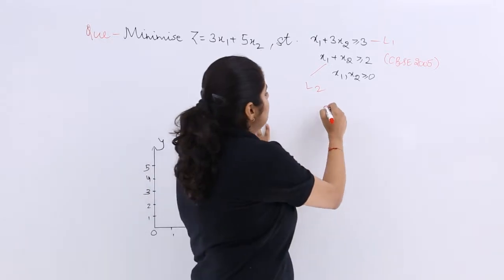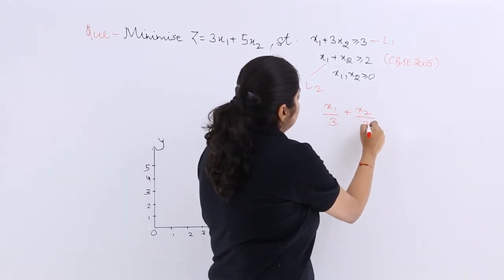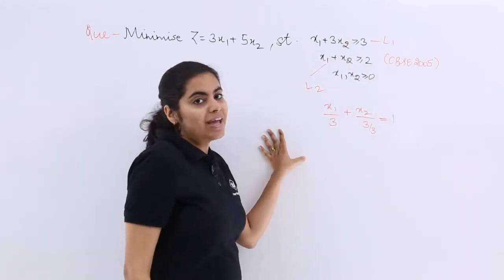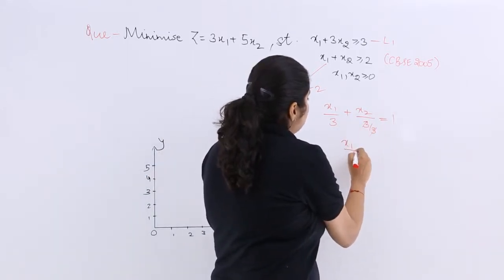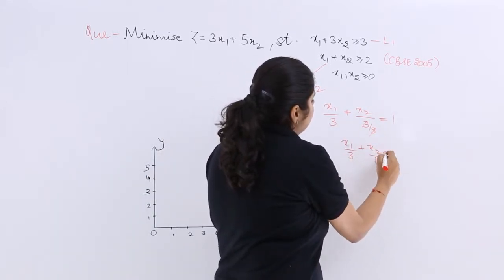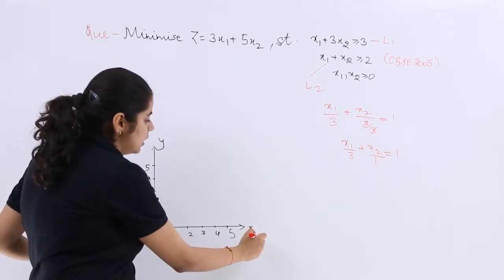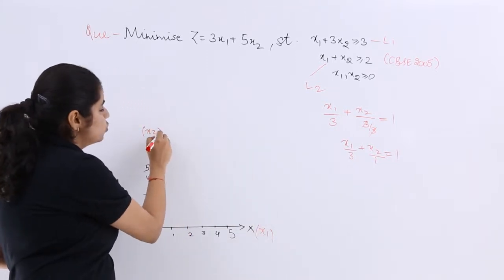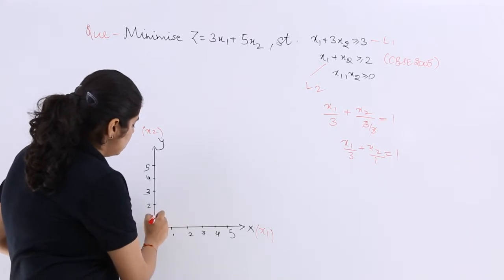So L1, if I write it as x1 upon 3 plus x2 upon 1 equals 1, making it the form of x upon a plus y upon b equals 1. Means on x1, which can be named here, this can be named as x2, I have 3 and 1 respectively. So this is your 3, this is your 1.